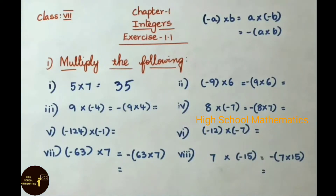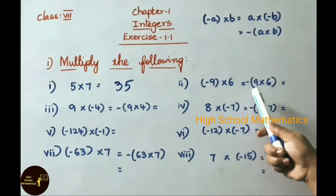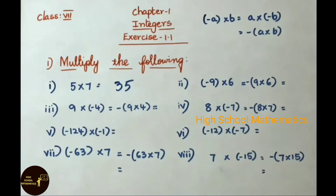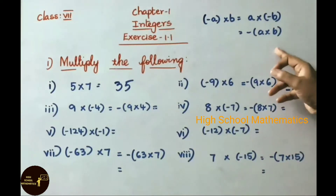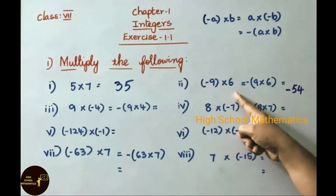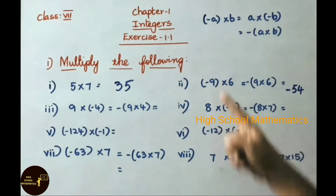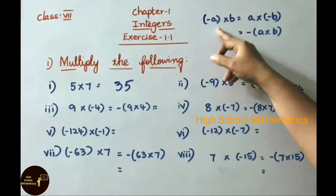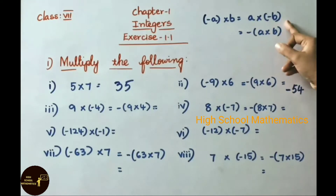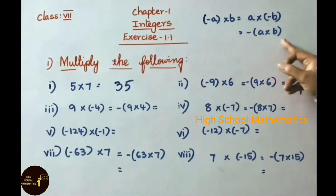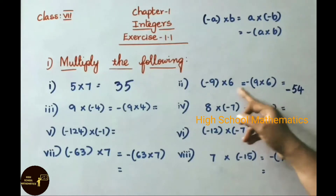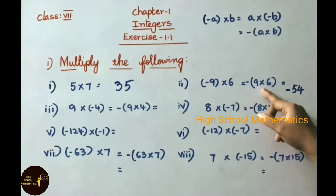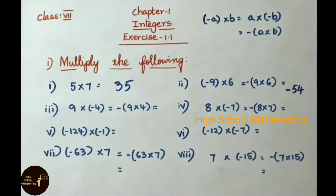See the second sum: minus 9 into 6. That equals to minus of 9 into 6, that equals to minus 54. So the answer is minus 54. This is based on this formula: whenever one negative integer and one positive integer is given, or one positive and one negative is given, we can apply this formula — that is minus a into b, or a into minus b, that can be written as minus of a into b.